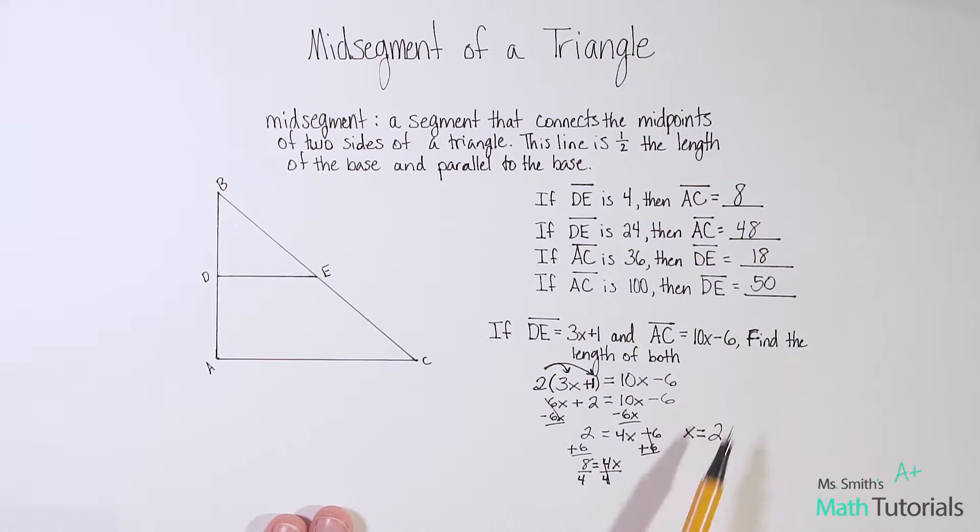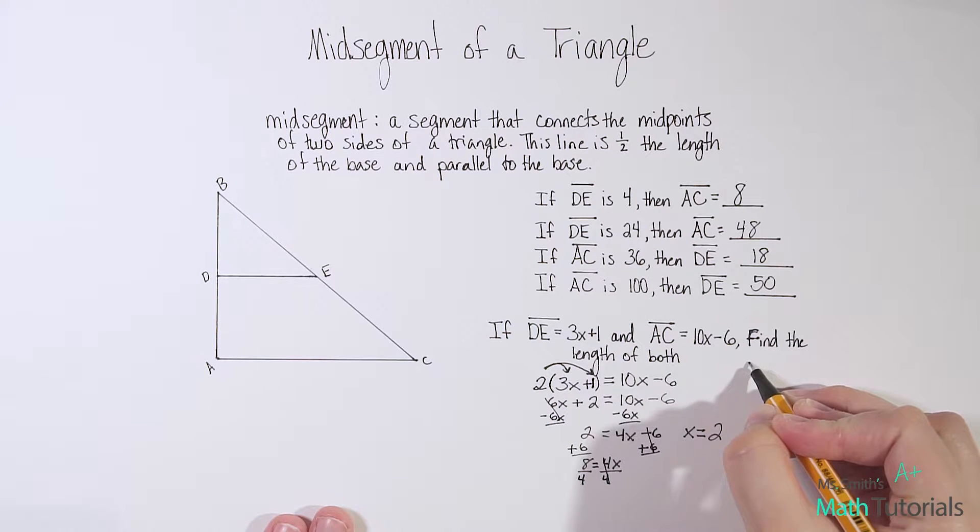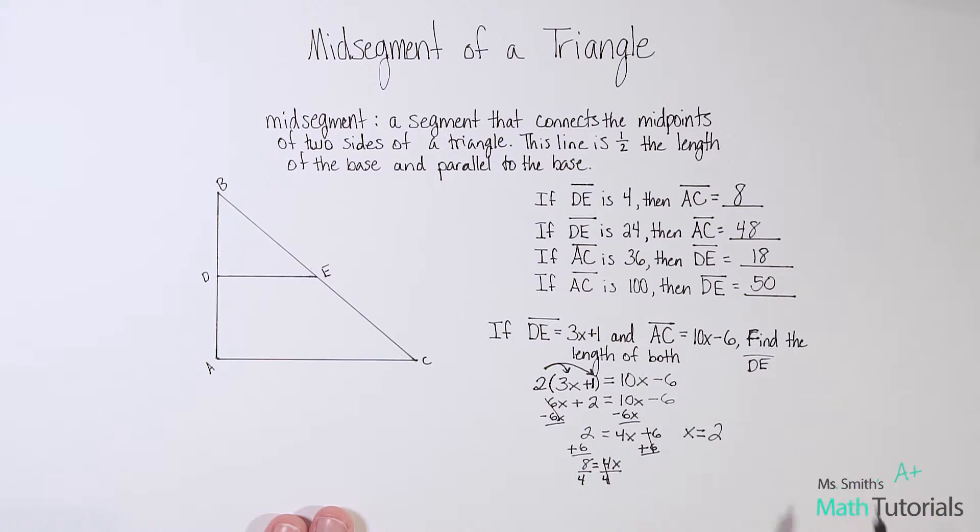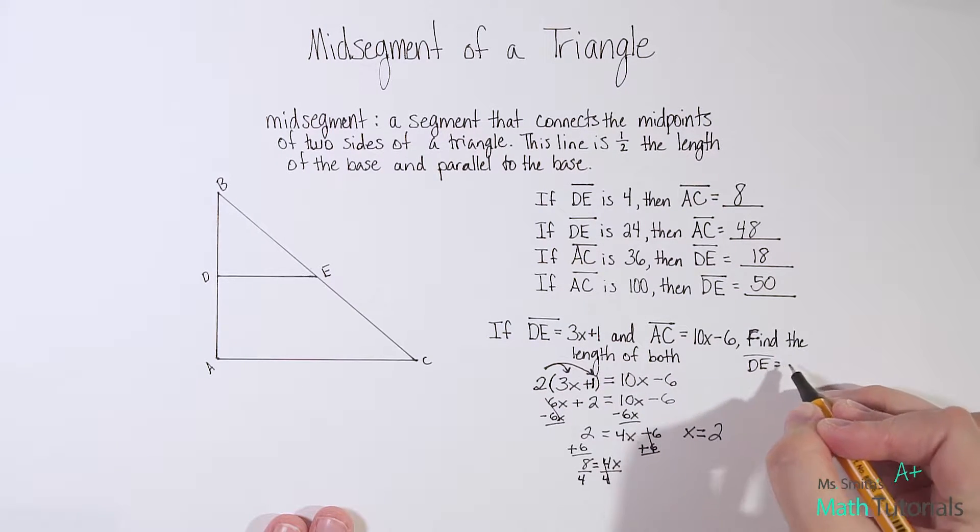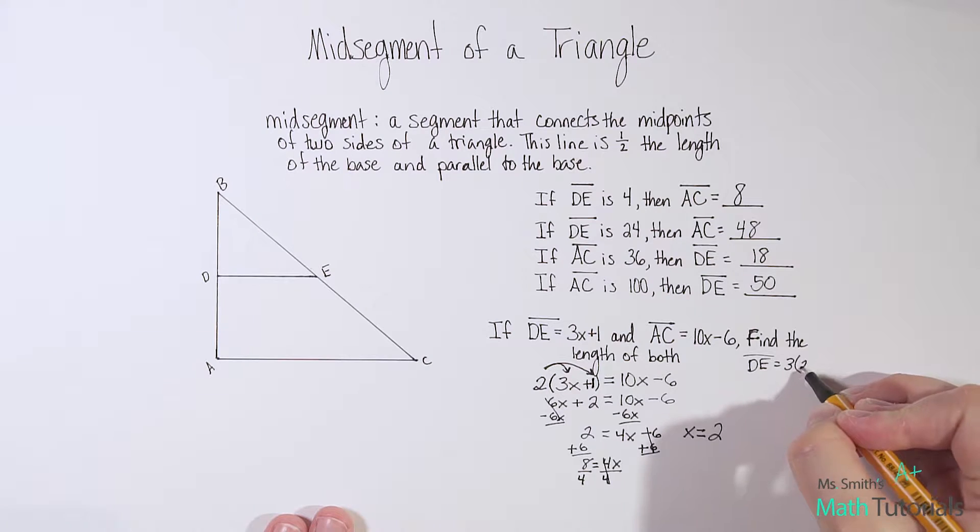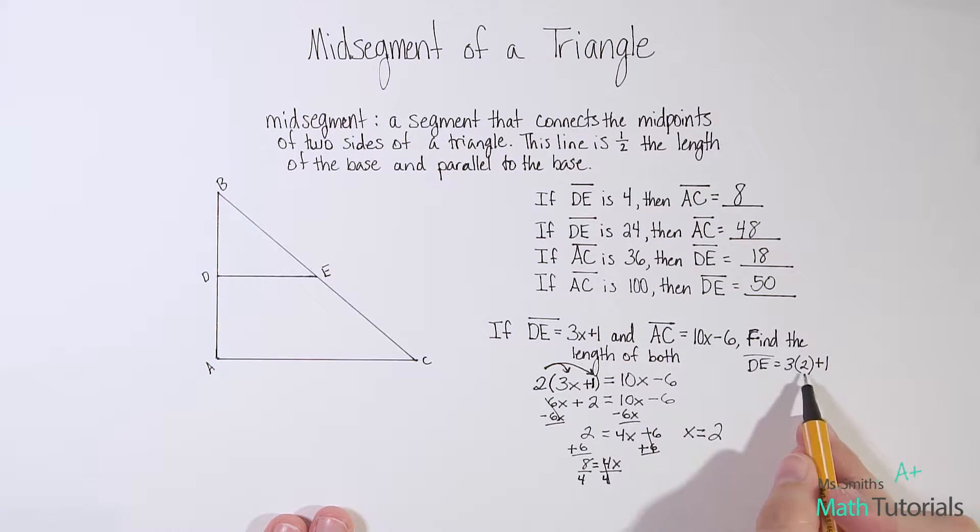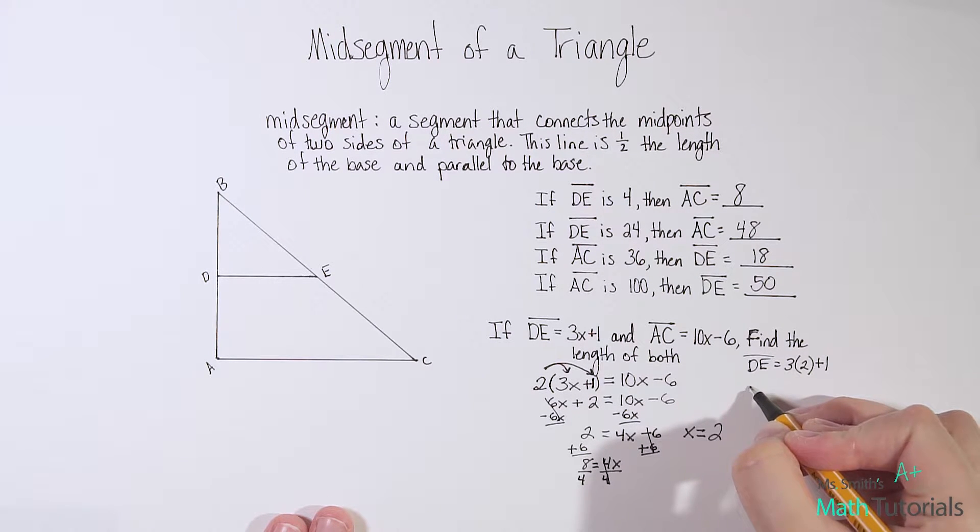Now I've got to be careful because they didn't ask... 2 is not my answer. They didn't ask me to find x. They asked me to find the length of DE and to find the length of AC. But now I have all the information I need because I know what x is. It's 2. So let's first find DE. So DE is 3 times x, which is 2, plus 1. So 3 times 2 is 6. 6 plus 1 is 7. So I know the length of DE is 7. That's one of my answers.